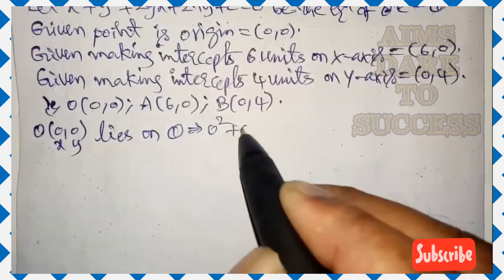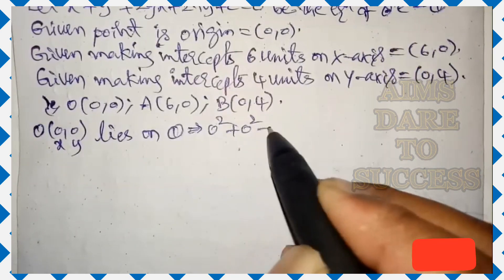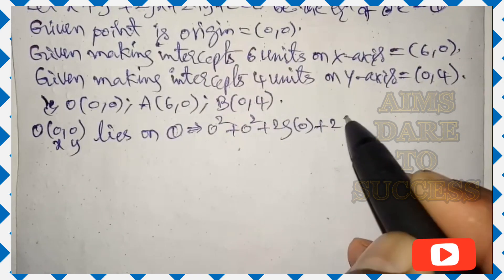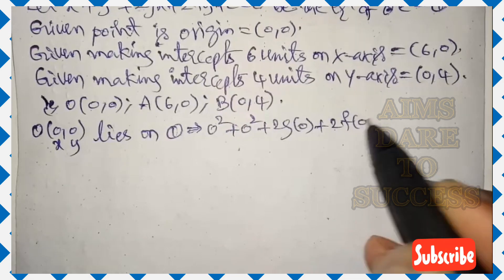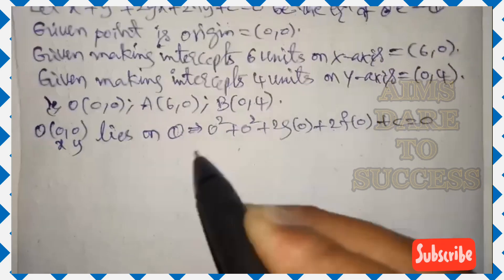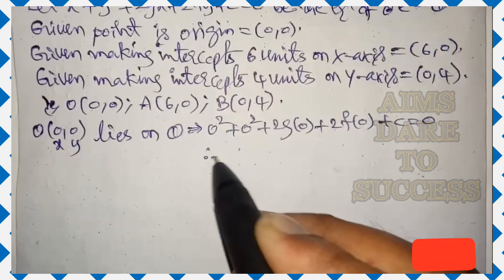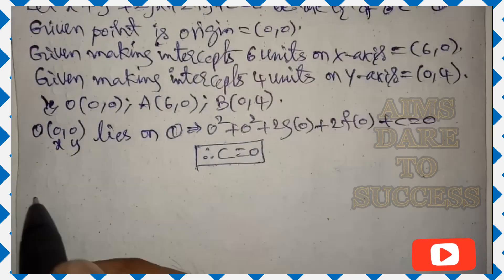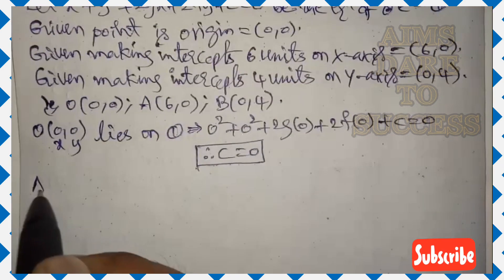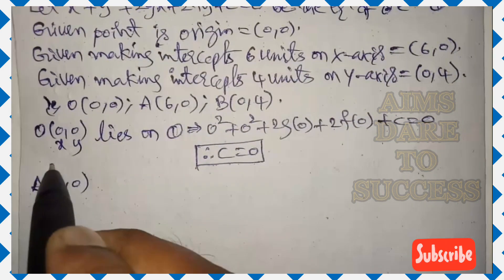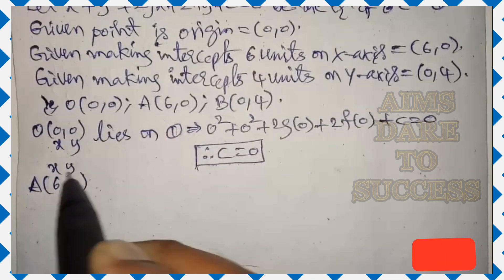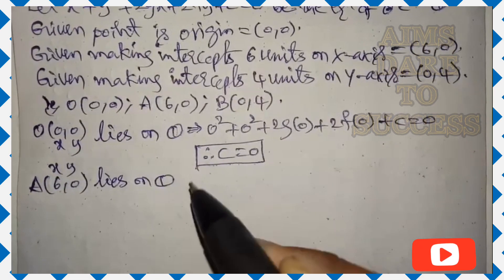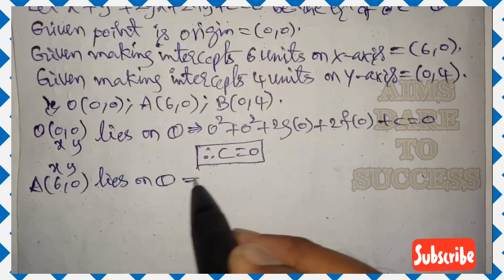First point: origin (0, 0). x = 0, y = 0 lies on equation 1. We get 0² + 0² + 2g(0) + 2f(0) + c = 0. Except c, all remaining terms are equal to 0. Therefore c = 0.